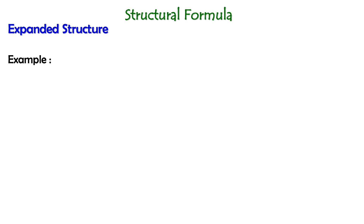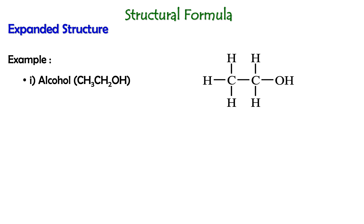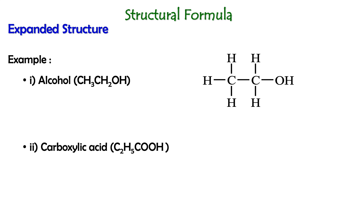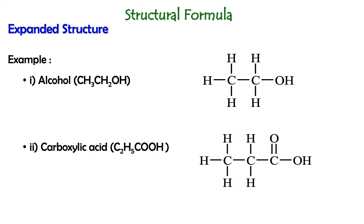Let's look at some examples. The first one is an alcohol with the molecular formula CH3CH2OH. We can convert it into an expanded structure with this representation. The next example is a carboxylic acid with molecular formula C2H5COOH, with this expanded structure of the molecule.